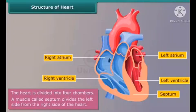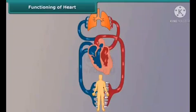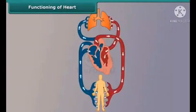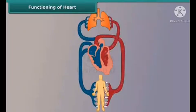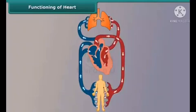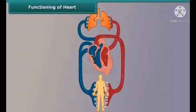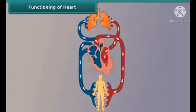The muscle called septum divides the left side from the right side of the heart. The right side of the heart pumps deoxygenated blood received from the other parts of the body into the lungs for purification. The left side of the heart pumps oxygenated blood received from the lungs to the rest of the body.